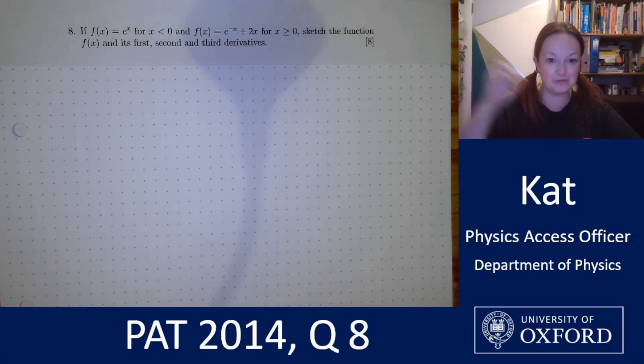So straight away we know that there are two parts to this question. We need to know what f(x) is and what its first, second and third derivatives are, and we also need to know what f(x) looks like and what those first, second and third derivatives look like.